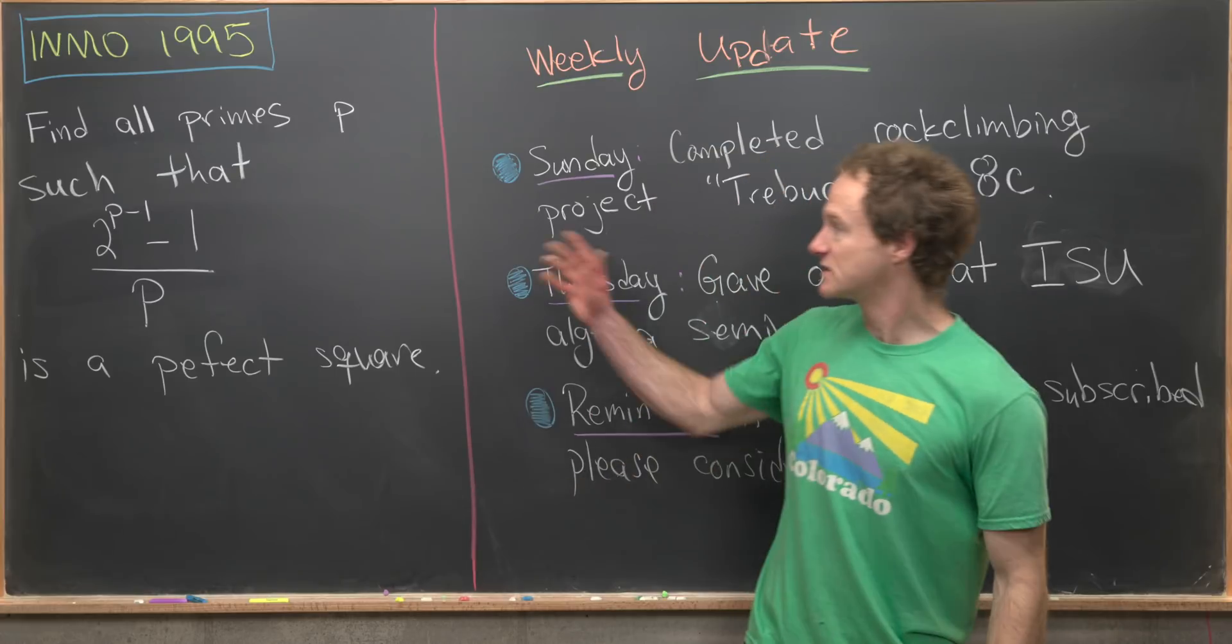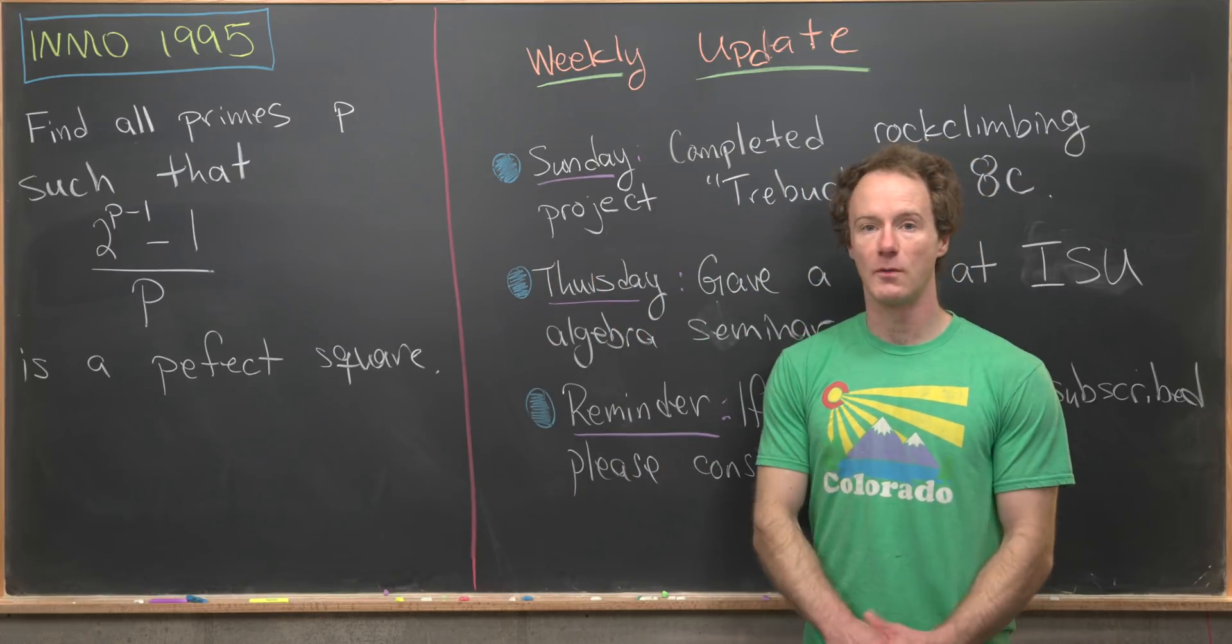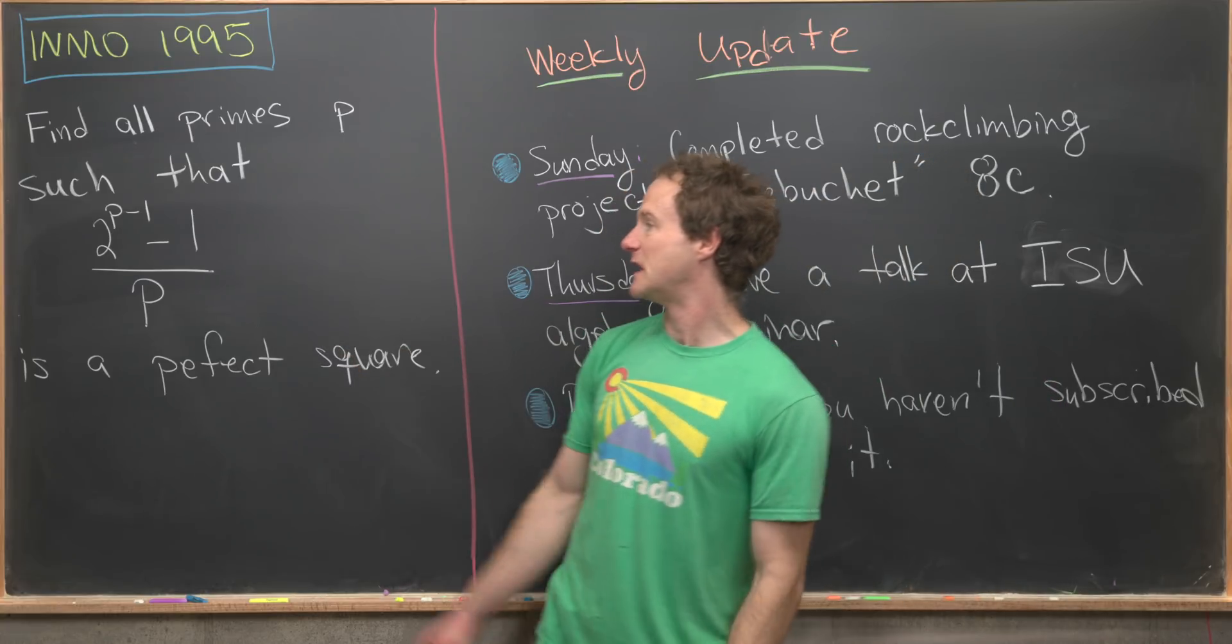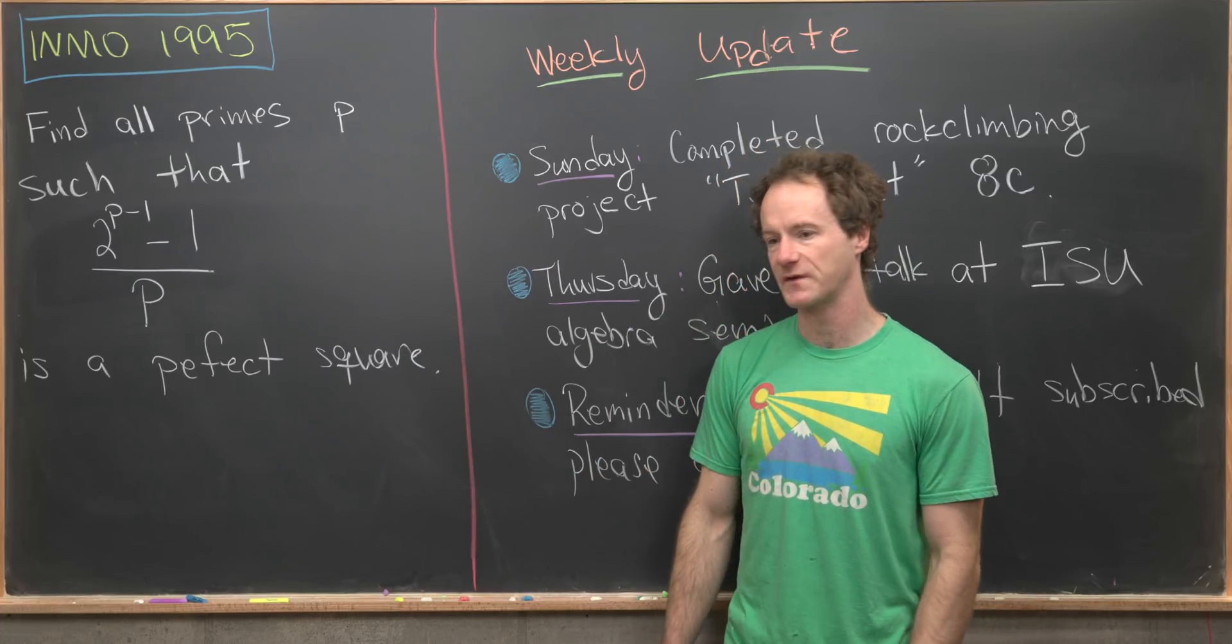Okay, so now let's look at the statement of this problem. Our goal is to find all primes p such that (2^(p-1) - 1)/p is a perfect square.